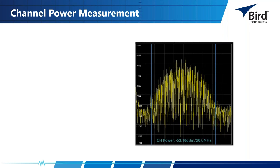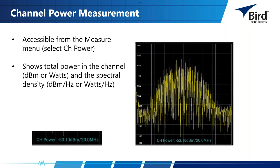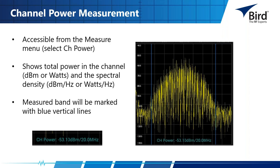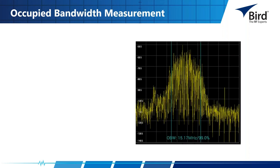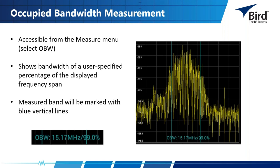The channel power measurement is accessible from the measure menu — select channel power. This shows the total power in the channel in dBm or watts, and the spectral density in dBm/Hz or watts/Hz. The measured band is marked with blue vertical lines. In this example, channel power is −53.10 dBm with a band that is 20 MHz wide. The occupied bandwidth (OBW) measurement, also from the measure menu, shows the bandwidth of a user-specified percentage of the displayed frequency span — in this case an occupied bandwidth of 15.17 MHz covering 99% of the power.